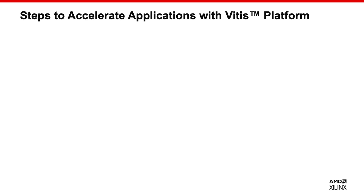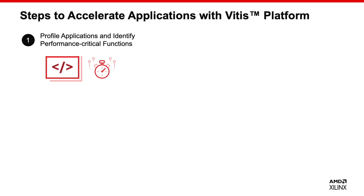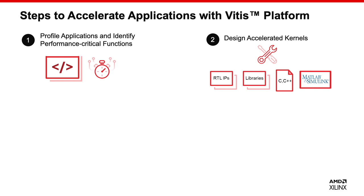Then we decide to use FPGA to solve this problem. The next question is how to do your development with VITES. There are four main steps. The first step is to identify the needs for acceleration and establish your performance goals. In my application, I want to put all computing parts to be accelerated, especially the SSP algorithm. Once you make that decision, the next step is designing the accelerated kernels that can be deployed on FPGA fabrics.